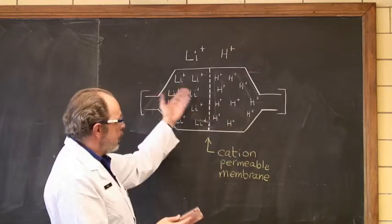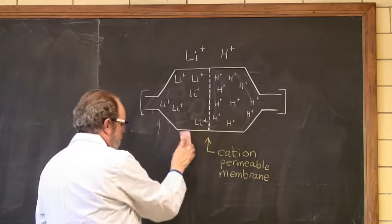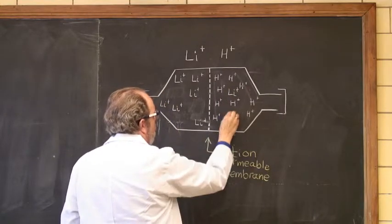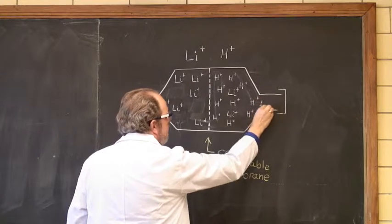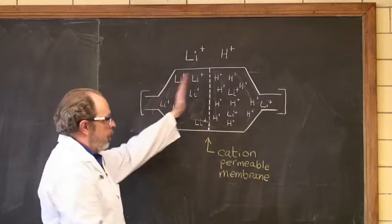It will happen. It's cation permeable. So let's move a few of these lithium ions. And they make it over to this side of the membrane.